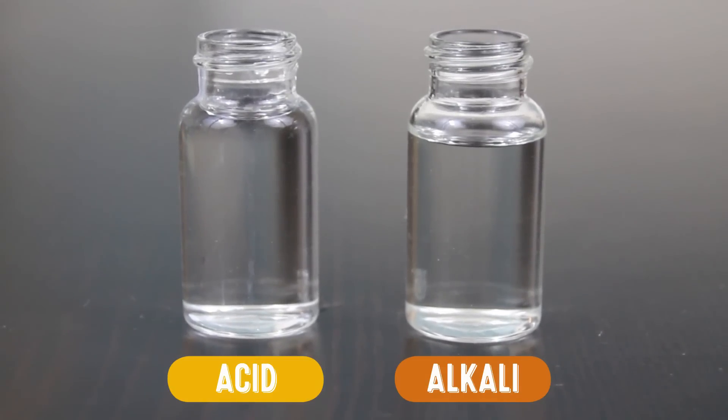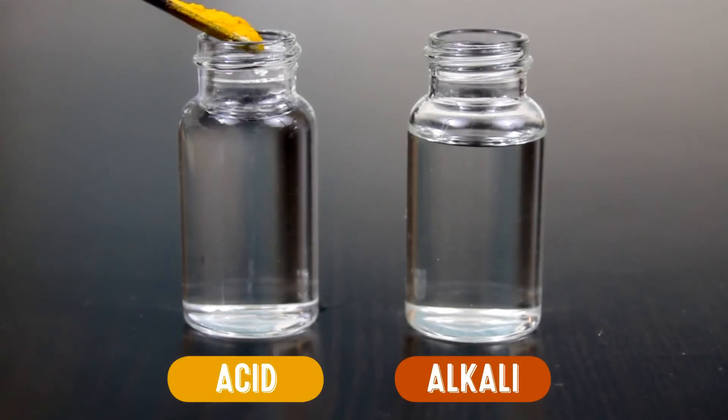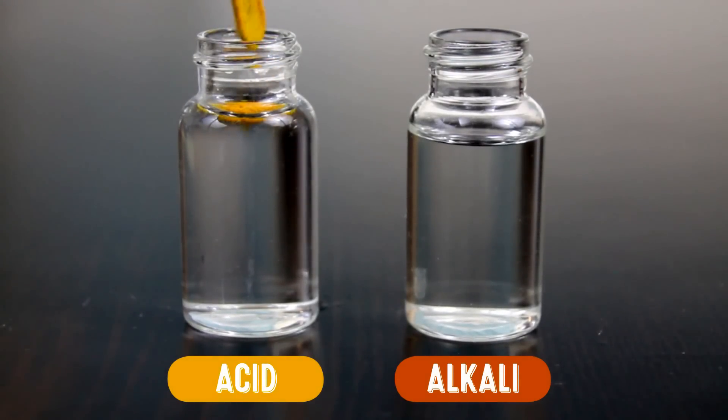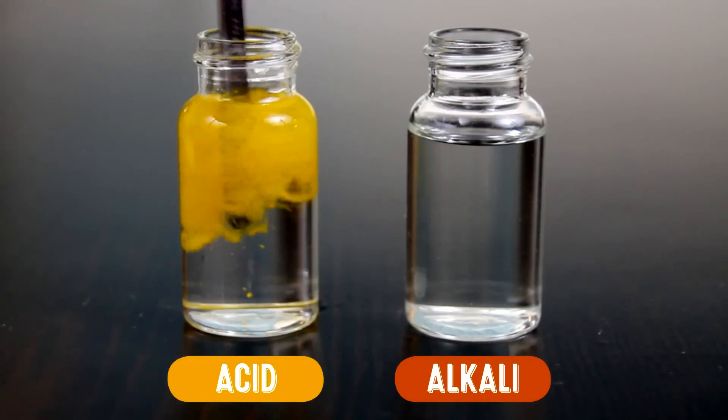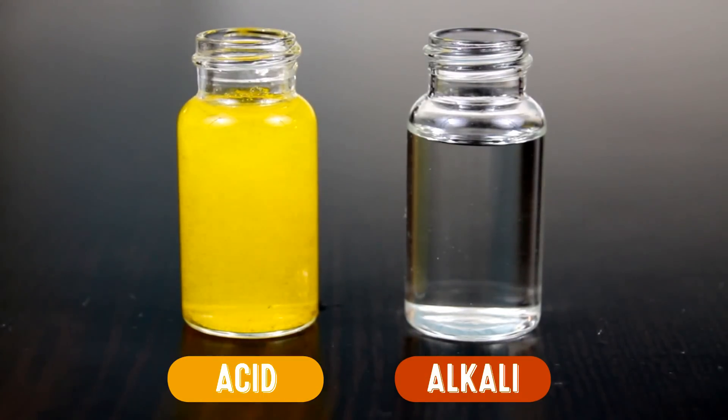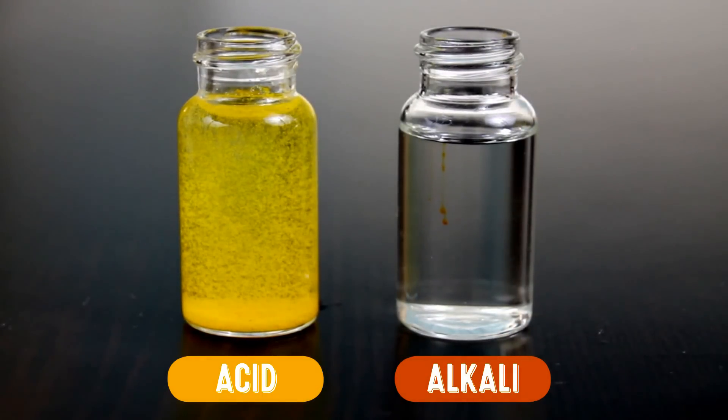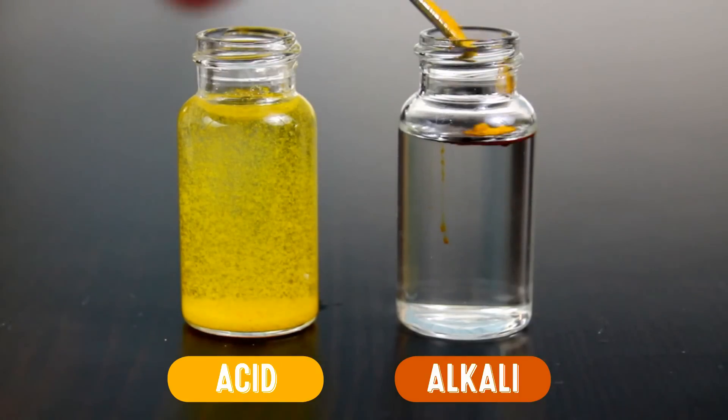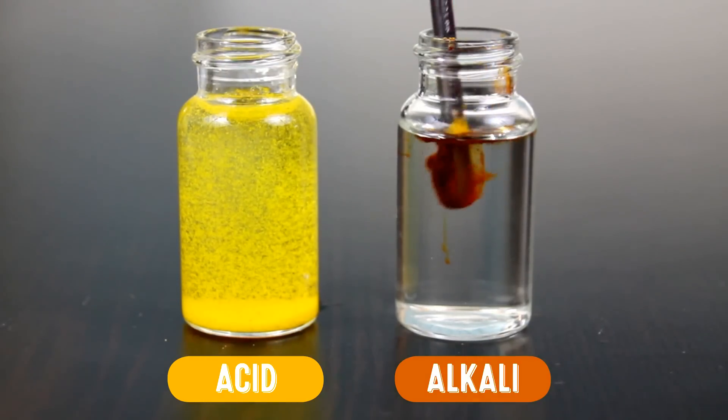Fluorescence isn't the only cool chemistry turmeric is capable of. It can also help us spot the difference between acids and alkalis. When added to acids, such as lemon juice, the turmeric stays yellow. Add it to an alkali though, such as this dilute bleach solution, and it quickly turns a deep red.